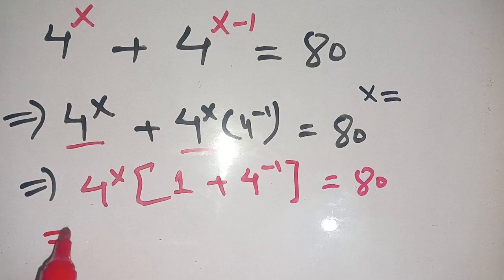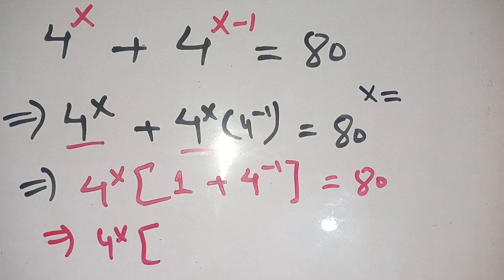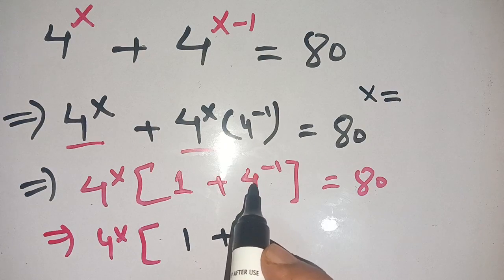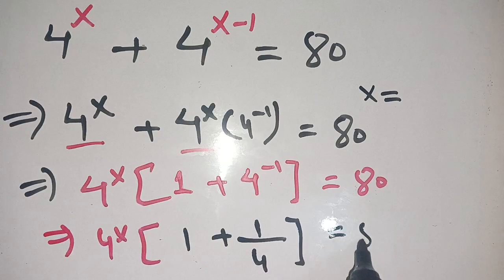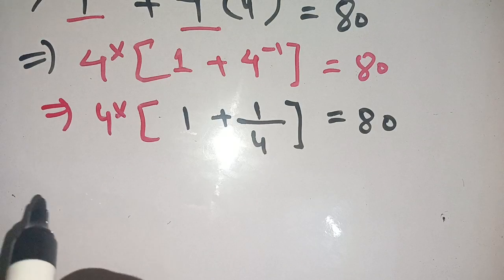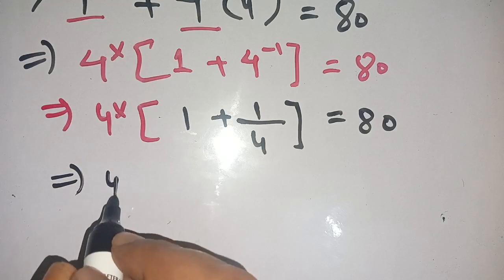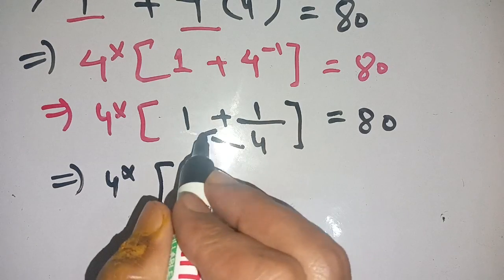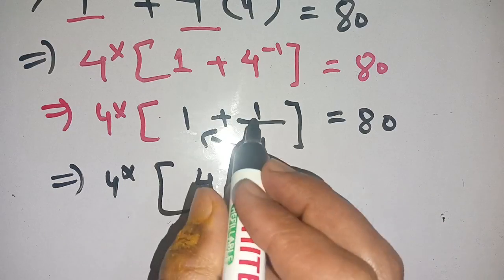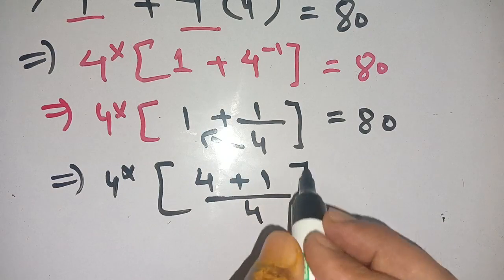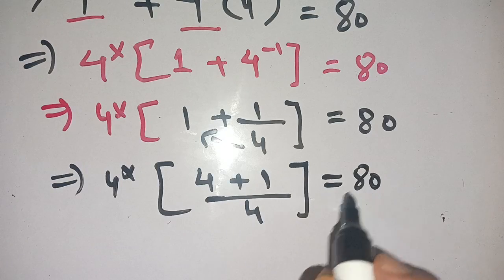Now we have 4^x × (1 + 1/4) = 80. We simplify the bracket: cross-multiplying gives (4 + 1)/4 = 5/4.